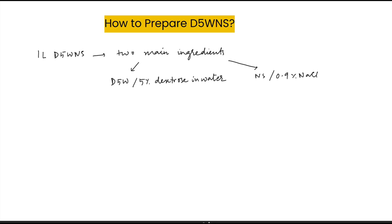So first we need to prepare D5W or 5% dextrose in water. So to make this you need 5 grams of dextrose in 100 ml of sterile water.